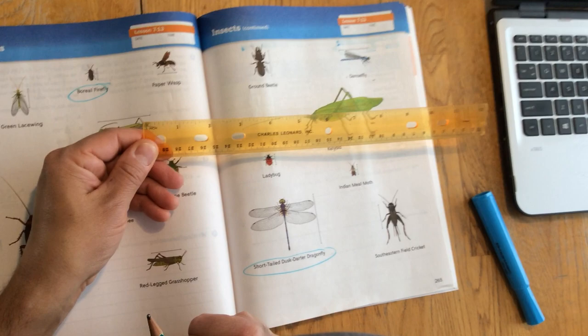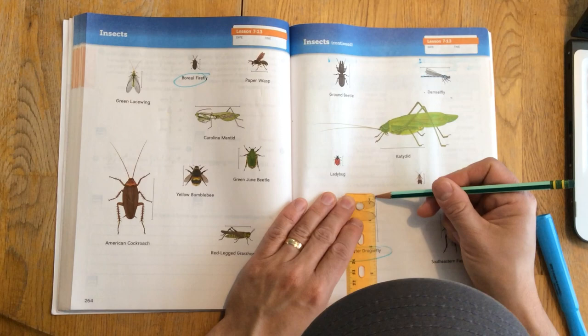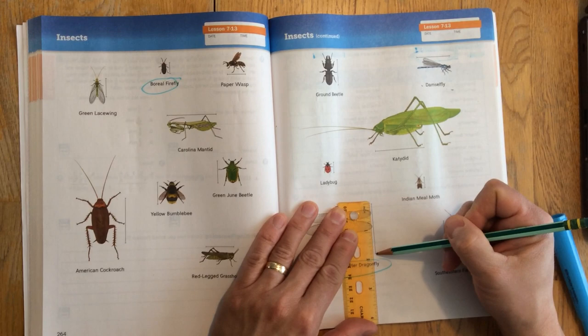So when I take a look at the first insect, the short-tailed dusk darter dragonfly, I'm going to line up not the edge of my ruler but where the line that starts the first inch is. I'm going to line that up with this guideline here, and then I'm going to look at where it stops. And as I can see, it hits right about here.